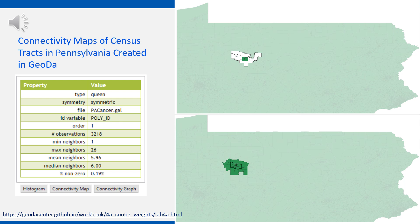Once the Local Moran's I is run, several maps are produced. The one on the slide is a connectivity map. It allows you to check which tracts are connected to each other. On the top image, you can see the neighboring tracts highlighted and the connection lines in the image below. More details about how to do this are on the GeoDa website.